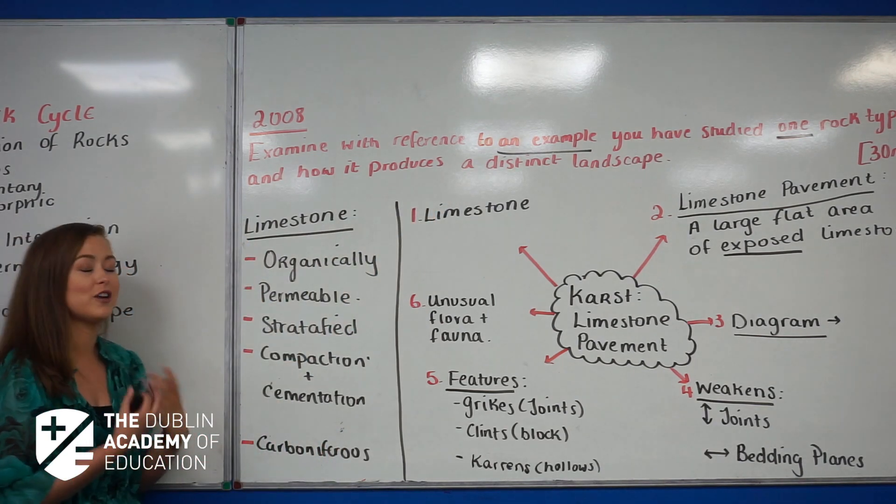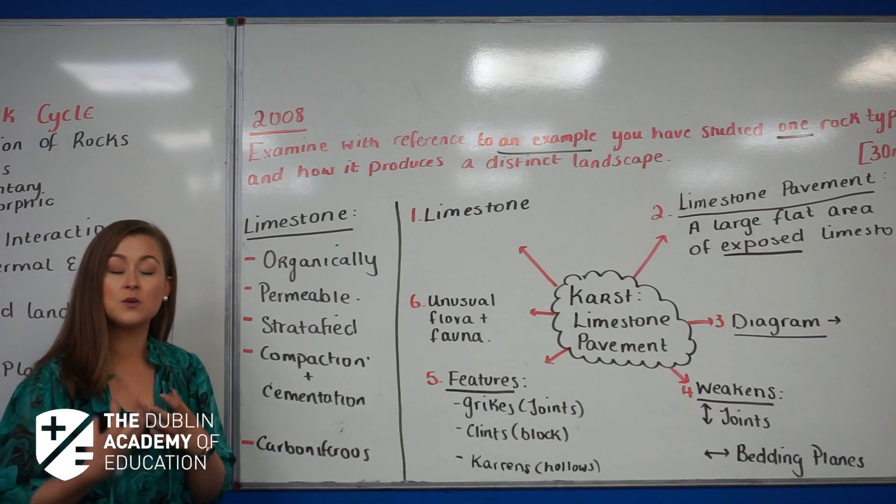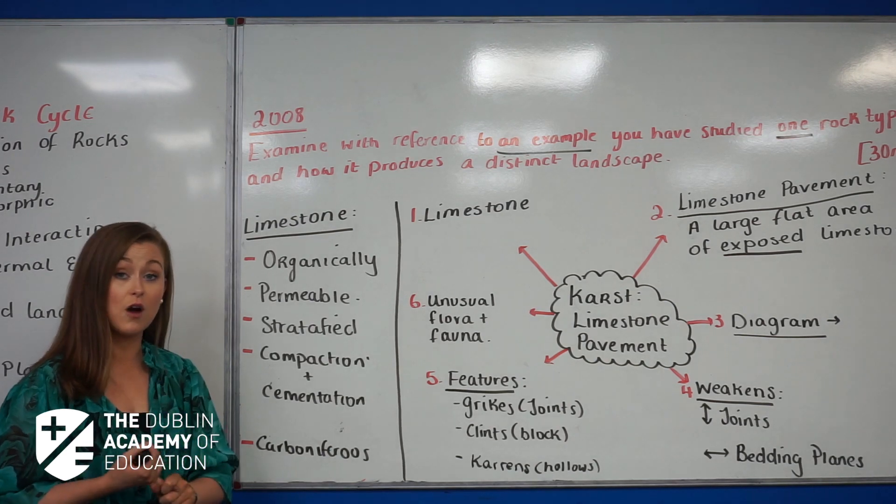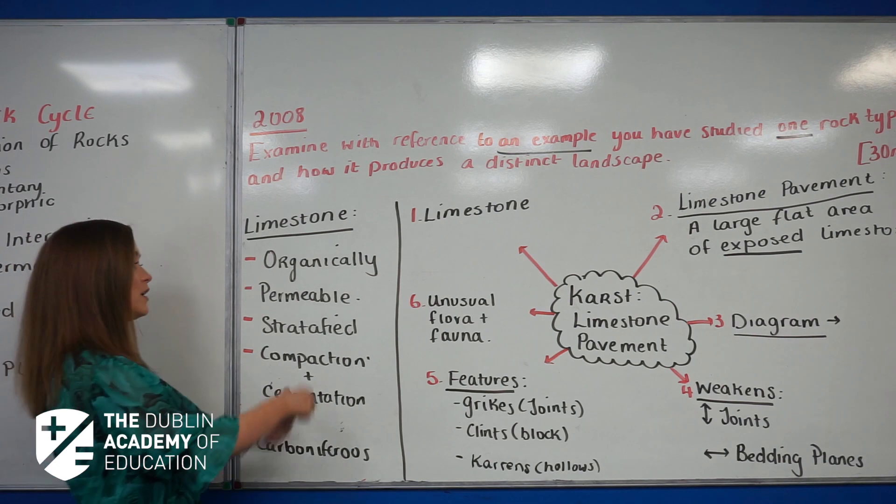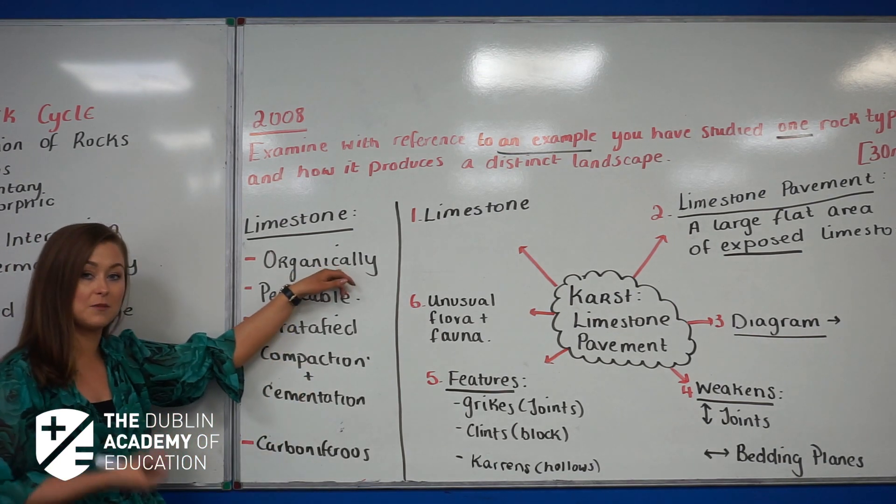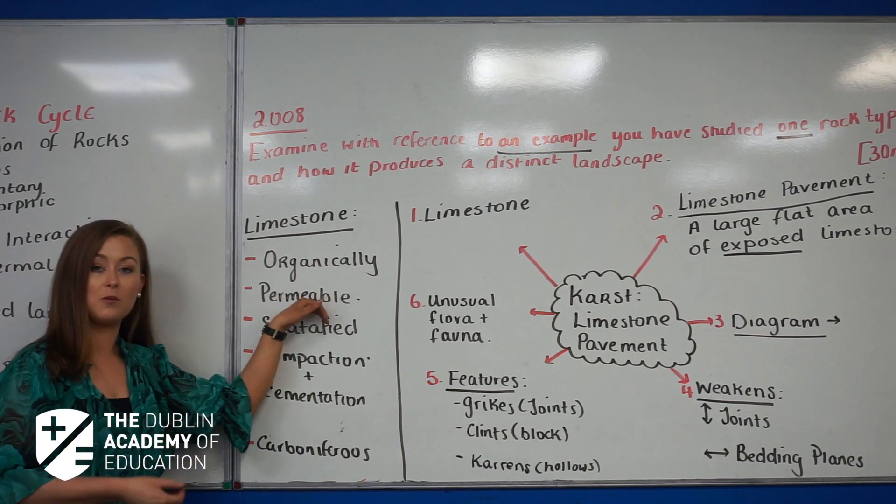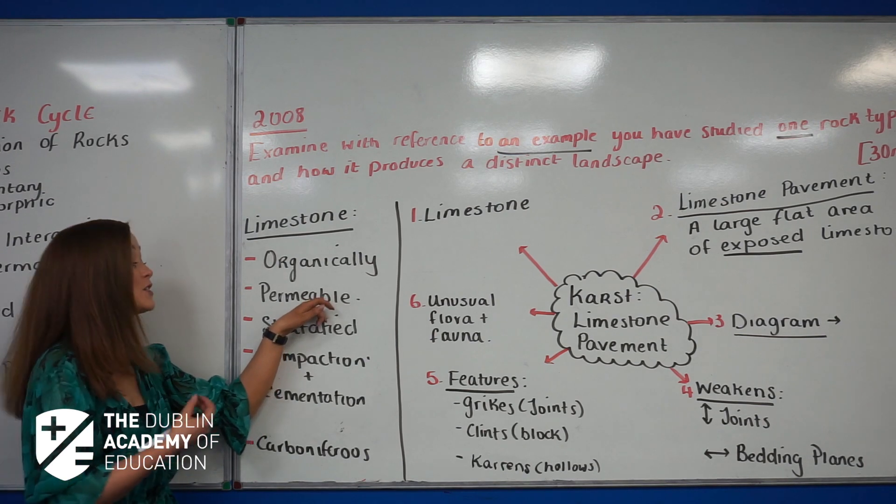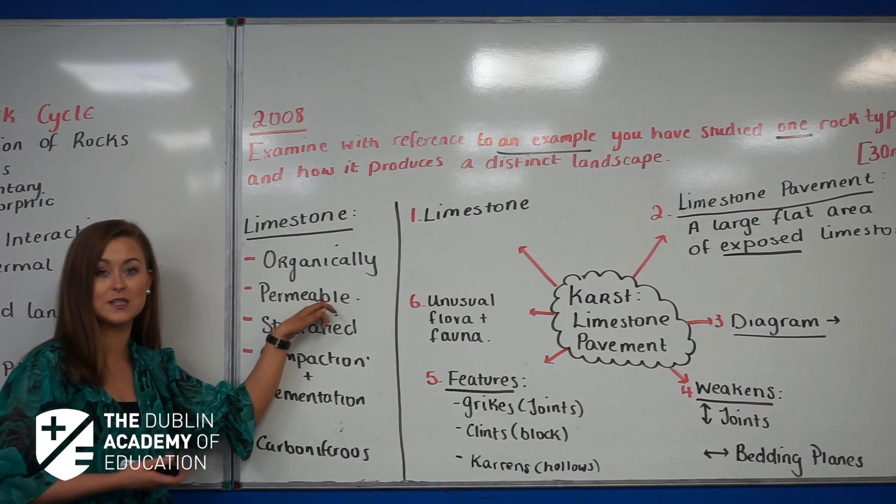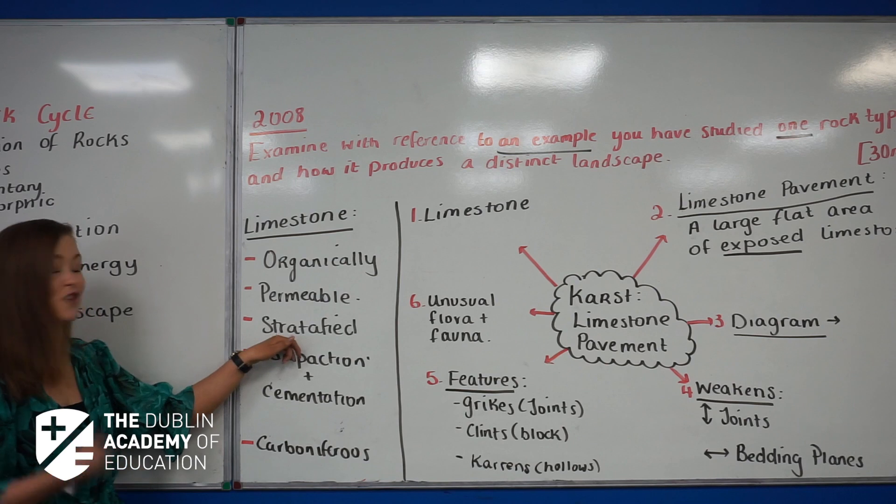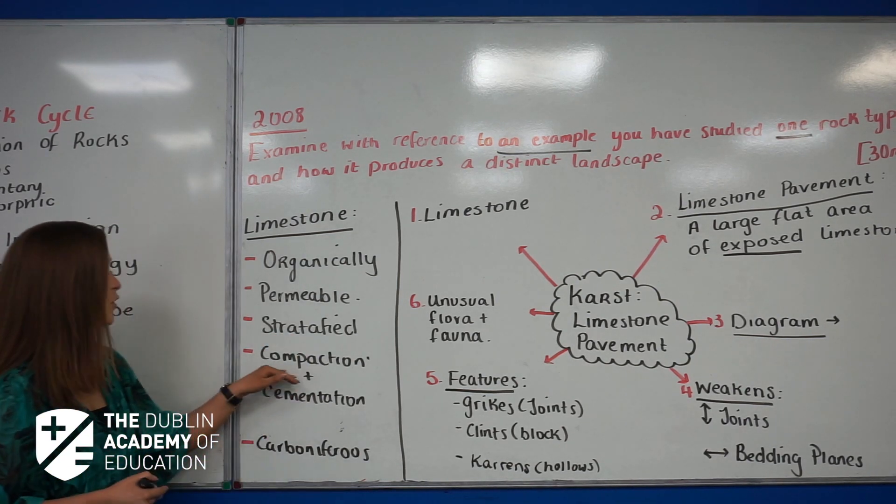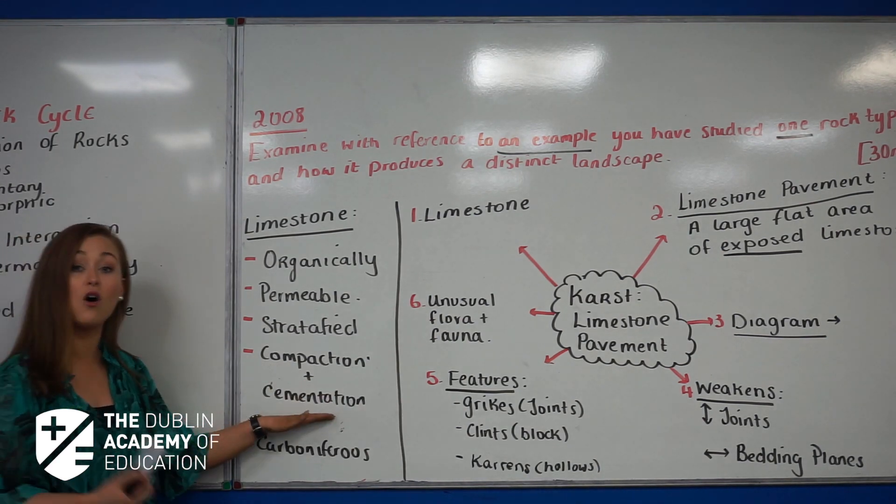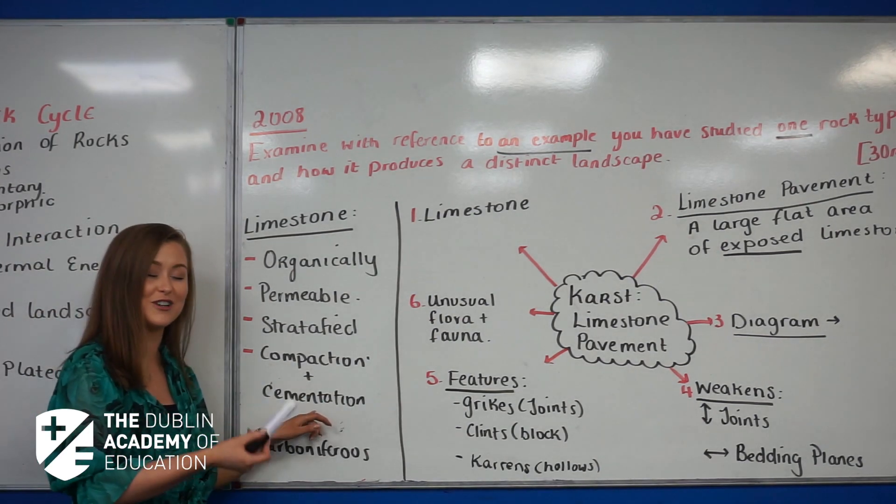Think about your keywords—what do you already know? In class, you would have covered limestone rock. Limestone is an organically formed sedimentary rock. It's permeable, which means water can pass through it, and it's particularly vulnerable to the chemical weathering process of carbonation. It's a stratified rock laid down in layers far from the shore on the bed of a warm, clear sea. It's formed from the compaction and cementation of the remains of marine creatures.